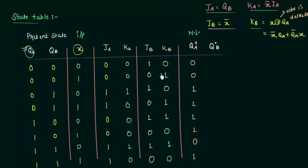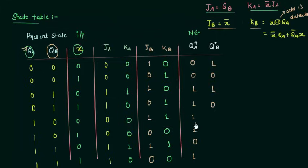By using JB and KB we will find out the next state QB+. We look at the present state QB. QB=0, JB=1, KB=0 means QB+ is 1. QB=0, JB=0, KB=1 means 0. QB=0, JB=1 gives 1. QB=0, JB=0 means 0. Then JB=1, KB=1 is toggling — present state QB=0, complement gives 1. JB=0, KB=0 is memory state with QB=0, so 0. JB=1, KB=1 toggling with QB=1, complement gives 0. Finally JB=0, KB=0 memory state with QB=1 gives 1. So this is the complete state table and we are done with step 2.